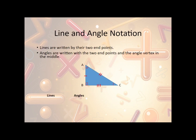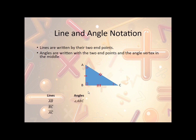So we need to be able to discuss how to label each of these parts of the triangle. Line segments are written by their two endpoints — for instance, this is AB, then we'd have BC, and then we have AC or CA, either way works. Angles are given by the two endpoints with the vertex in the middle. So if I want this angle right here, that is ABC or CBA, with B in the middle. Then ACB represents this angle here, and BAC represents this angle right here. These are ways we can label the parts of a triangle.